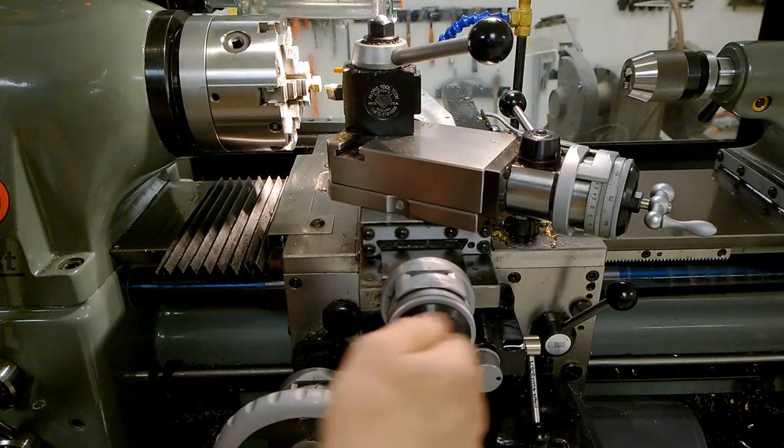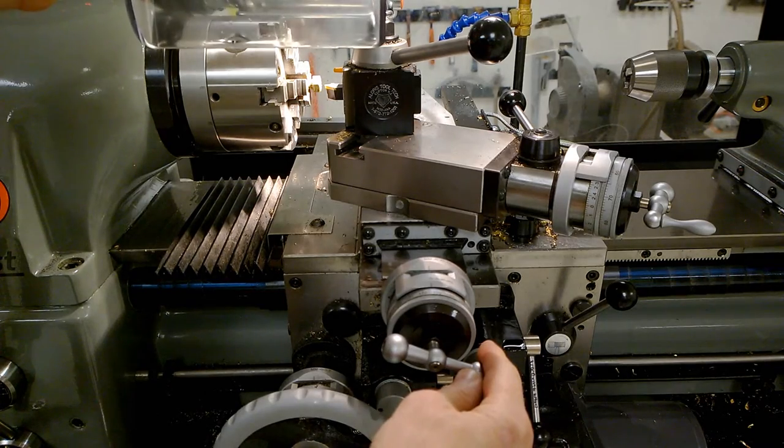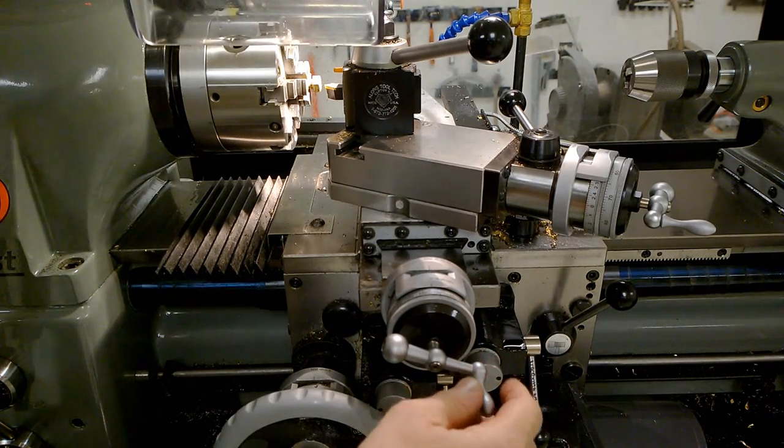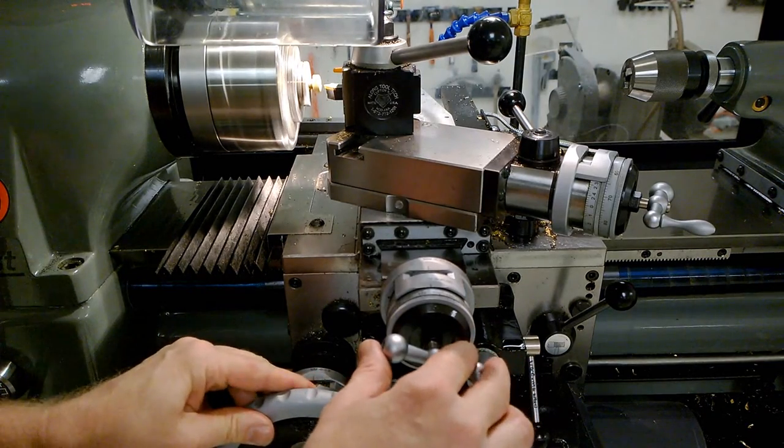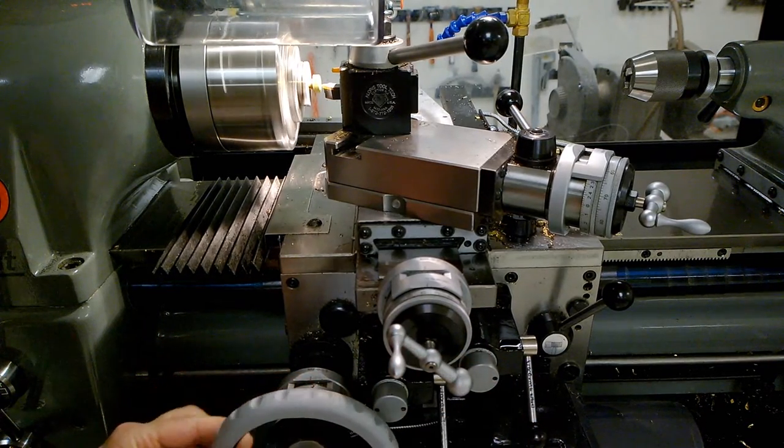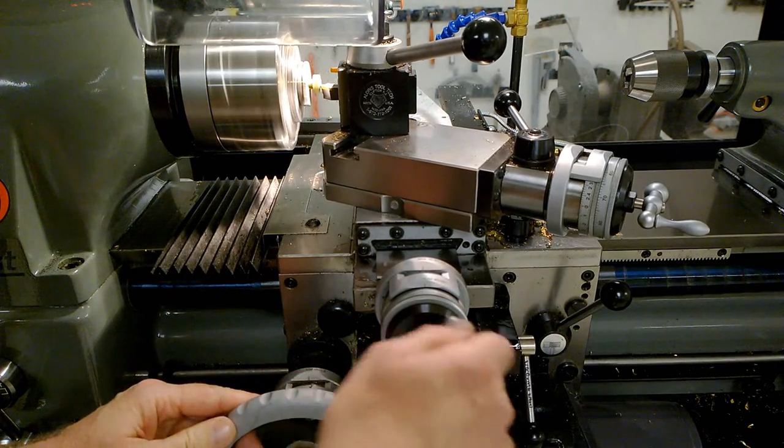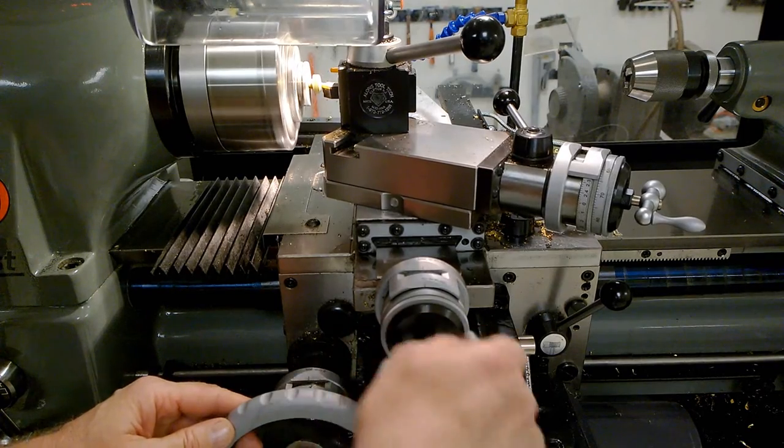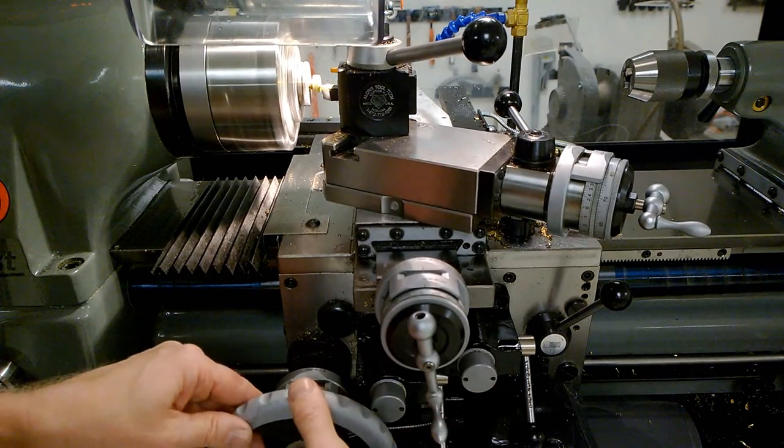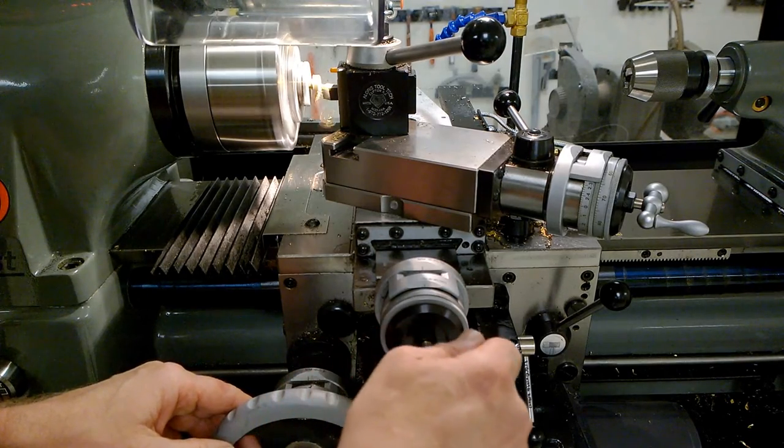This is called a facing cut. I use the large hand wheel to move the carriage about 30 thousandths of an inch towards the part for each cut.